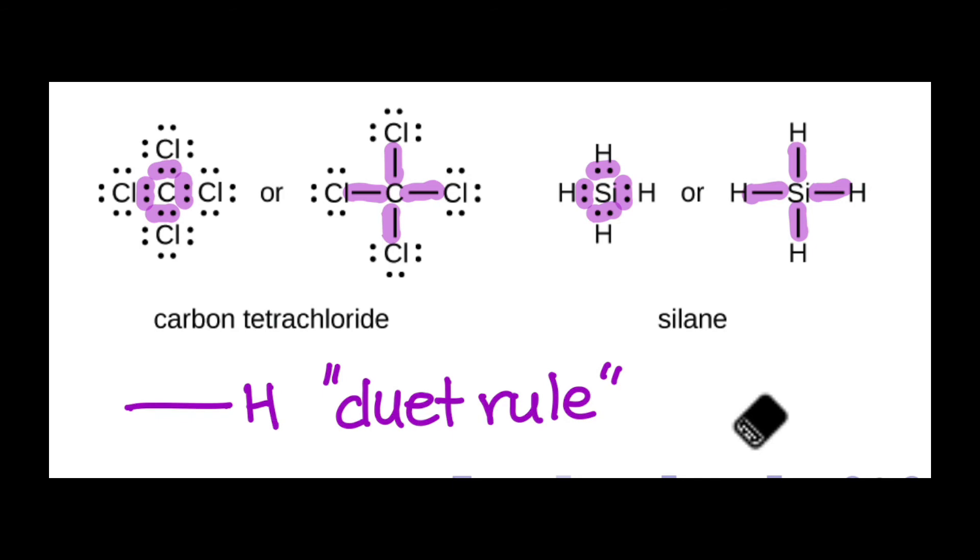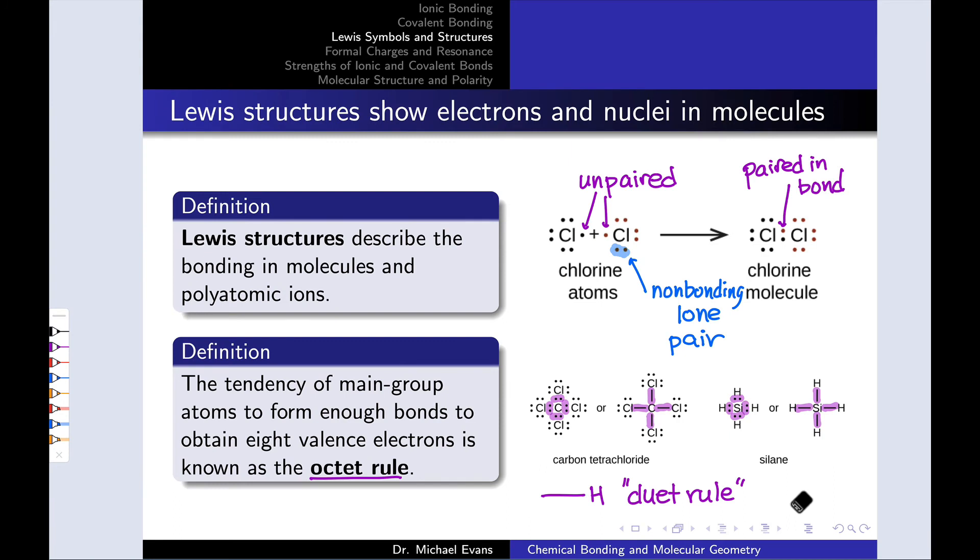Hydrogen appears to be following what's called a duet rule. And long story short, with hydrogen, it prefers to only form one bond because its valence shell, n equals one, can only hold two electrons total. Once that hydrogen has two valence electrons within the molecule, it has filled its valence shell, essentially. So hydrogen prefers to only form one bond, and indeed in the vast, vast majority of cases only forms one bond in covalent molecules.